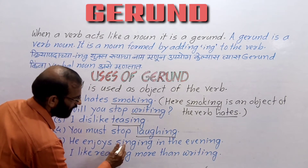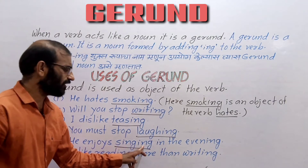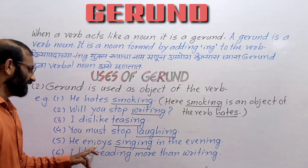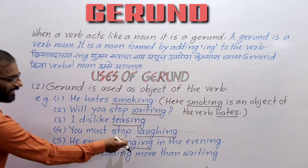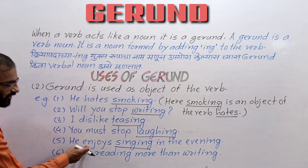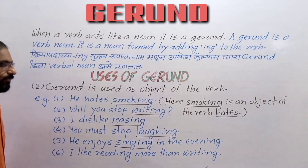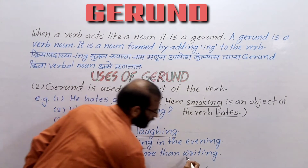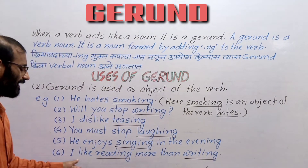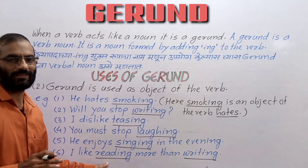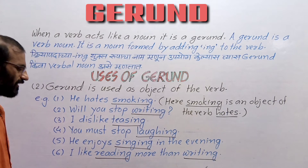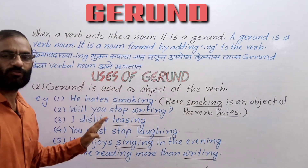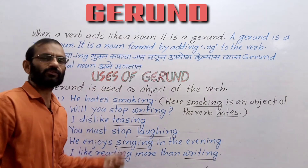'He enjoys singing in the evening.' Singing is the object and 'in the evening' is a complement phrase. Passive: 'Singing is enjoyed by him in the evening.' So singing is the object of the transitive verb 'enjoys.' 'I like reading more than writing.' Here reading and writing are two gerunds being compared. Reading is liked by me — so reading is the object of the verb 'like,' and both reading and writing are gerunds in comparative degree.